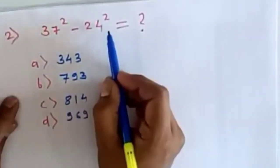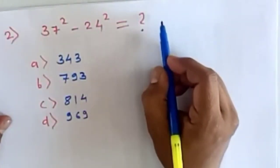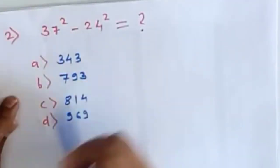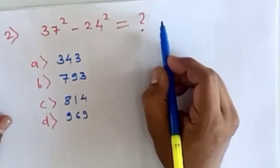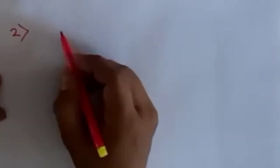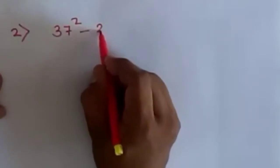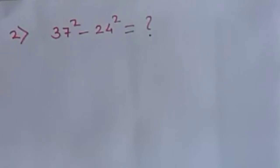If someone has not still understood this technique, we will try another example. In this problem, 37² - 24², we have given four options and we have to find the right answer. In this second problem we are going to subtract 24 square from 37 square. So let's get started.